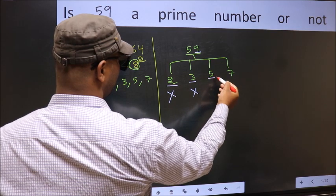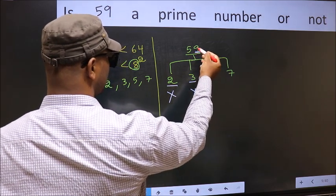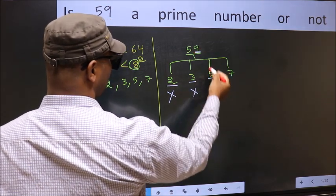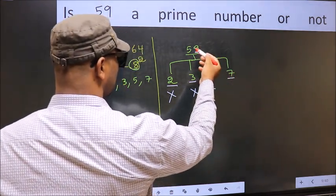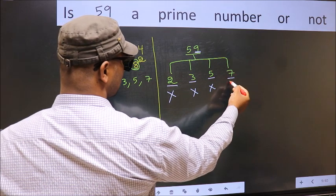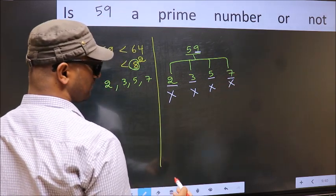Next number 5. Last digit is neither 0 nor 5. So, this is not divisible by 5. Next number 7. This number we don't get in 7 table. So, it is not divisible by 7.